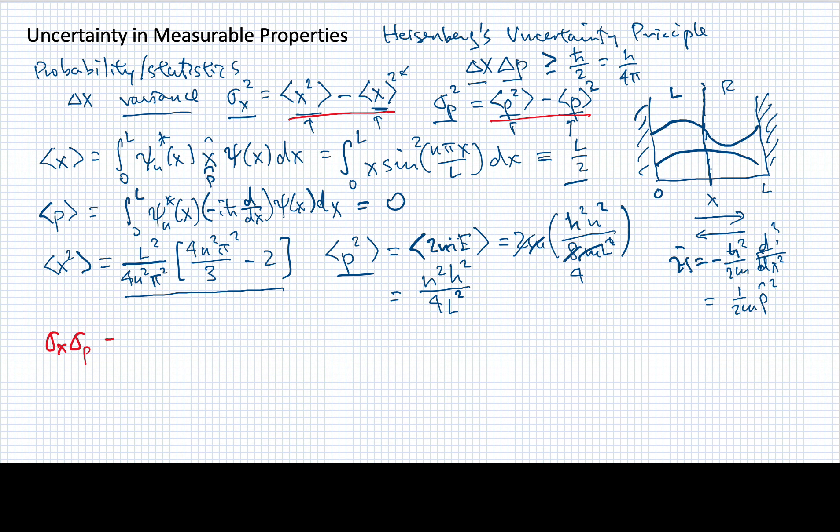If I take X squared minus X quantity squared, that will give me a rather cumbersome expression of L² over 4n²π² times (n²π² over 3 minus 2) when I subtract the expectation value of X.